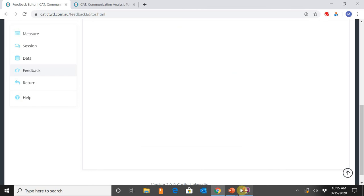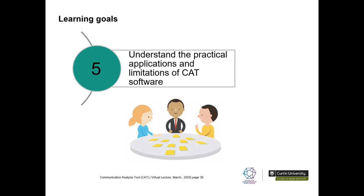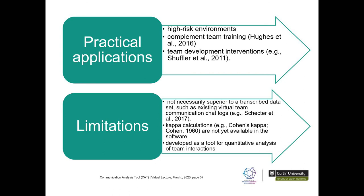That's how I use the CAT. In terms of practical applications, it is appropriate for high-risk environments including operating rooms, cockpits, and oil and gas rigs, as the visualisation of coded team data can provide teams with direct feedback about their social interactions. It can also complement team training or development interventions, as behaviour-based feedback can stimulate important reflection and team learning. In terms of limitations, the CAT is not necessarily superior to transcribed data sets such as existing virtual team communication chat logs. CAPA calculations are not yet available, and the software was developed primarily for quantitative analysis of team interactions, so it is not appropriate for qualitative purposes.